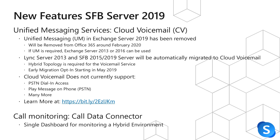Some new features in Skype for Business Server 2019: we now have changes with cloud voicemail. Exchange UM will be removed from Office 365, and it has already been removed from Exchange Server 2019. This will happen roughly around February 2020 for the Office 365 portion. If unified messaging is required, Exchange 2013 or 2016 needs to be retained or built on-prem. Lync Server 2013 and Skype for Business Server 2015 users will be automatically migrated to cloud voicemail, so a hybrid topology is required for the voicemail service. You will need to sign into Office 365, ensure you have Azure AD Connect for cloud voicemail, and also have licenses for the users in Office 365. Early migration opt-ins began in May 2019 where you can have your tenant upgrade to cloud voicemail.